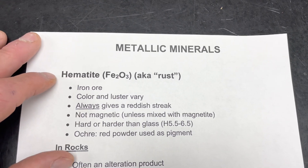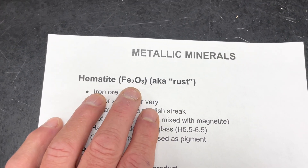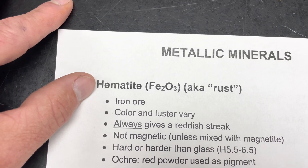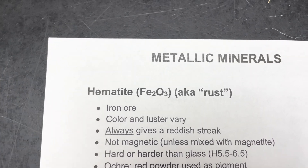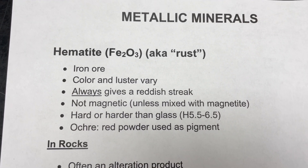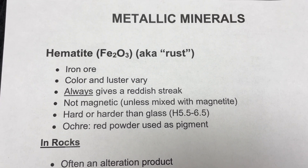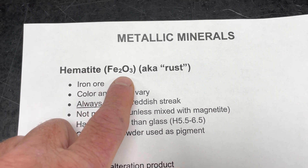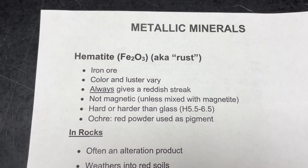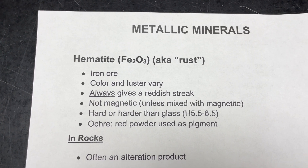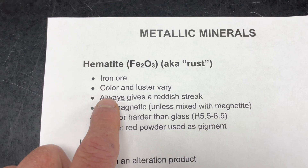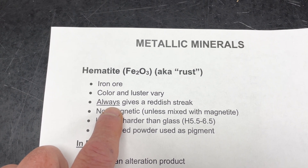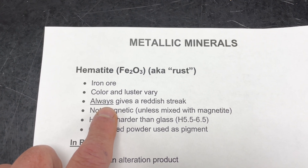We're going to start with hematite. Hematite really is the same thing as rust — when iron oxidizes, it forms a mineral. In the common world you call it rust, but in the mineral world it's called hematite. It's a kind of weird mineral: its color and luster vary. Sometimes it's metallic in luster and sometimes non-metallic, depending on how much oxidation has occurred. The color varies from reddish-brown to silvery gray. The big giveaway is it'll always yield a reddish streak — even in a silvery gray sample, a reddish-brown streak is a big indicator that you've got hematite.